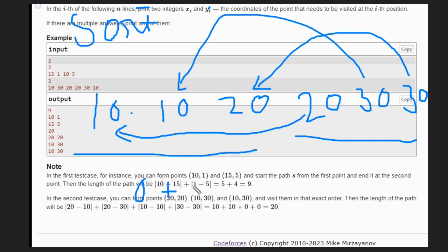Then we need to do 10 minus 20, the absolute value is 10. Then in this case 20 and 30, that will be 10 again. And 30 and 30 that will be 0 because we need to take x1 minus x2, then y1 minus y2. If there are multiple answers, then print any of them. That means there is some pattern and you need to find that pattern.